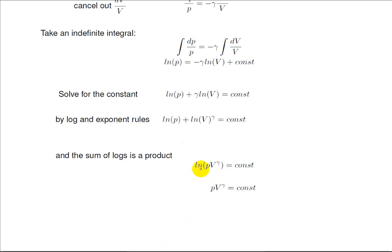Finally, we raise both sides of this to the power of E, so I get PV to the gamma in place of the log term. And I actually get a different constant, but then a constant is a constant. So what?